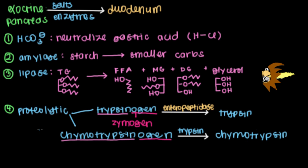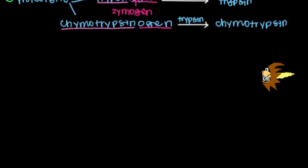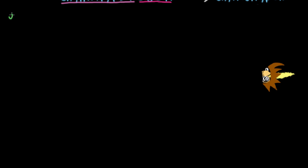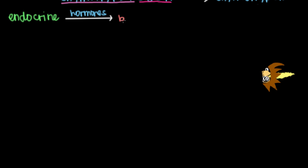Let's move on to the next part of the pancreas, known as the endocrine pancreas. This is actually the most famous part — we hear the most about it because it has a lot to do with diabetes. The endocrine pancreas releases hormones that go into the bloodstream, and they move throughout the body to the liver, perhaps the intestine, or even as far as muscles to cause things to happen.